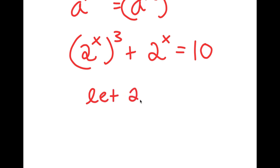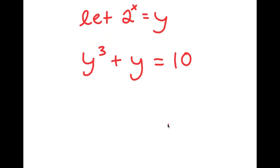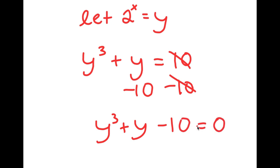Now I'm going to let 2 to the power of x equal to the variable y. So I get y to the power of 3 plus y is equal to 10. If I subtract 10 on both sides, I get y to the power of 3 plus y minus 10 is equal to 0.